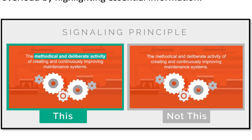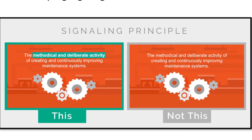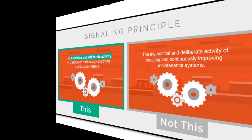As you can see from this example, the highlighted portion is in green so students know that is what the instructor wants them to remember. In the other example without highlighting, they're just sitting back looking at it trying to figure out what's important.